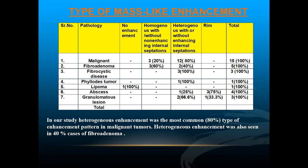For the type of mass-like enhancement, there are three subtypes: no enhancement, homogeneous, and heterogeneous enhancement. Most malignant breast tumors showed heterogeneous enhancement. Three patients (20% of 15 malignant patients) showed homogeneous enhancement. For fibroadenomas, both heterogeneous and homogeneous enhancement were seen. Heterogeneous enhancement was the most common pattern in malignant tumors, but heterogeneous enhancement may also be present in 40% of fibroadenomas.